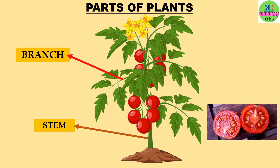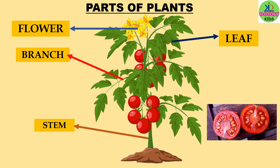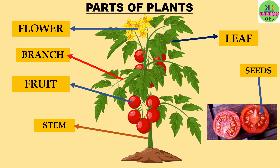This is branch (B-R-A-N-C-H). It is leaf (L-E-A-F). It is flower (F-L-O-W-E-R). And this is fruit (F-R-U-I-T). And there are seeds (S-E-E-D-S) inside the fruits.